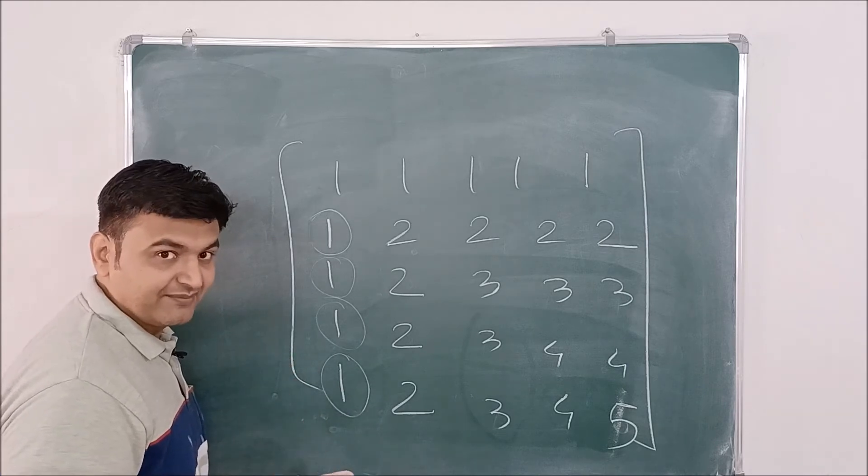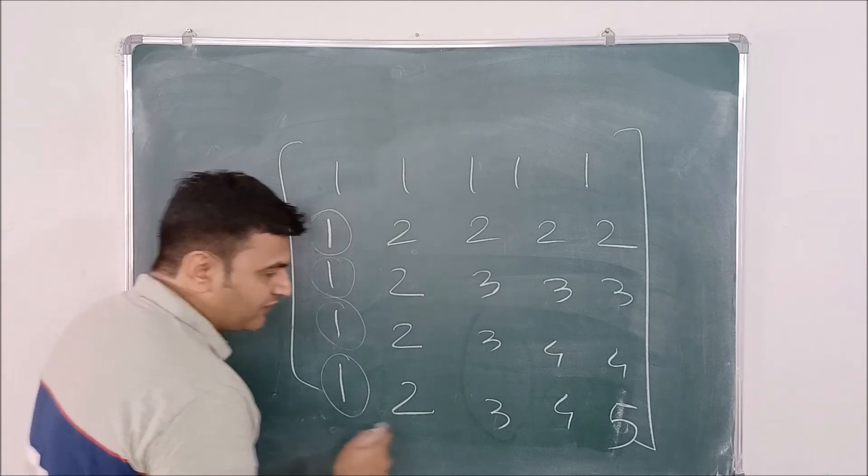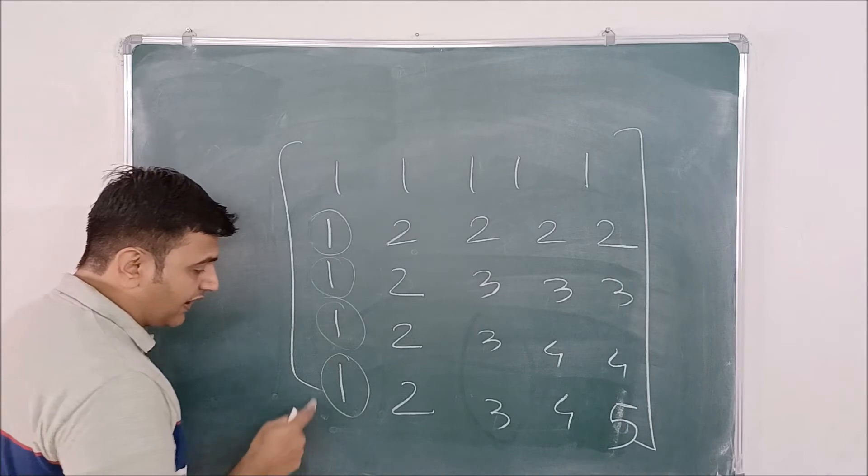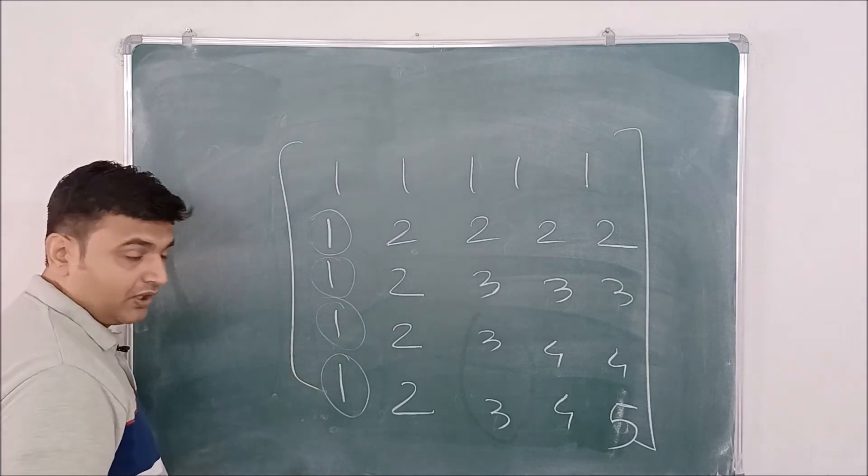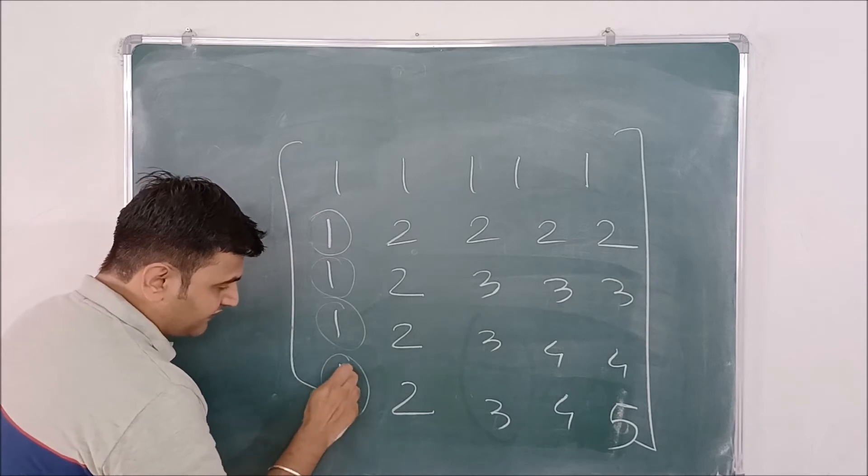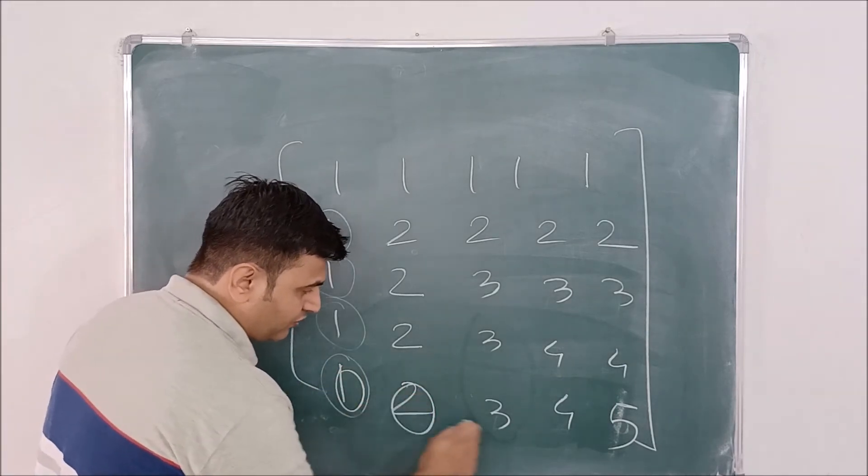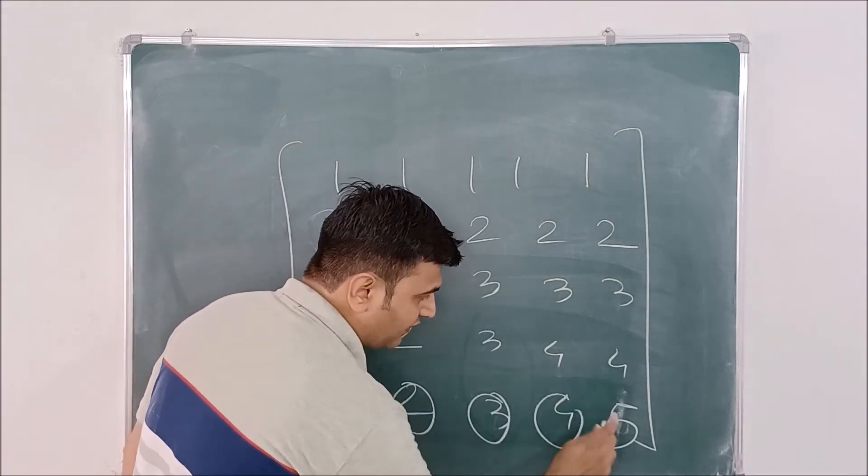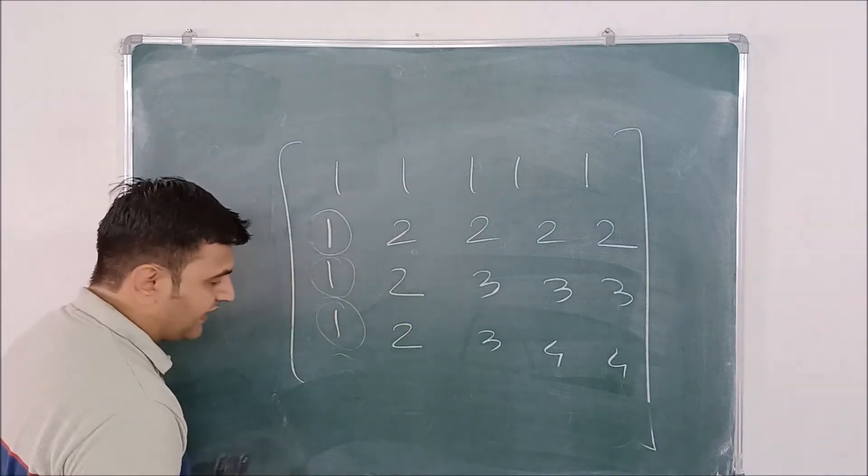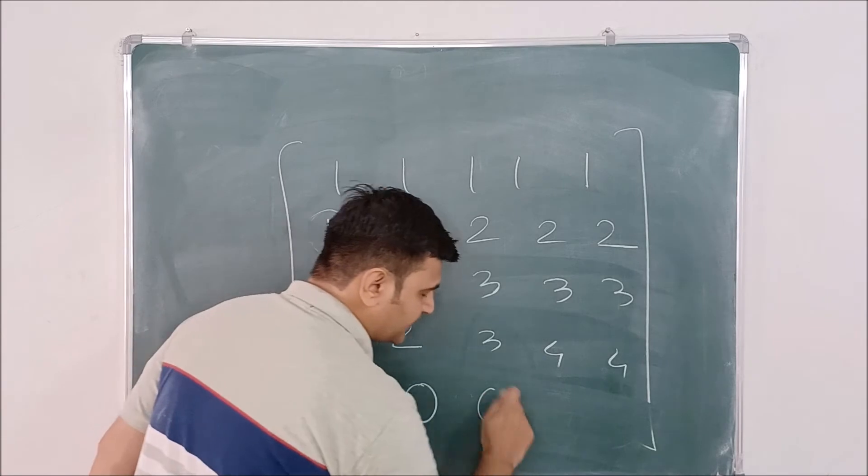Not in exam, but yeah, in calculations. So now what is the smart thing I will do is instead of doing R2 minus R1, I will do R5 minus R4. So when I do R5 minus R4, this one minus one is zero, this is zero, this is zero, this is zero, and five minus four is one. So ultimately my last row becomes zero zero zero zero one.